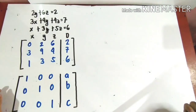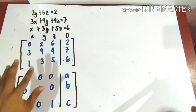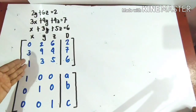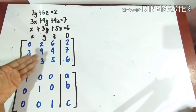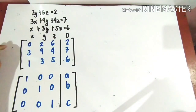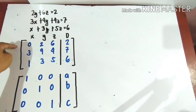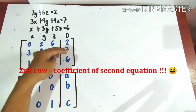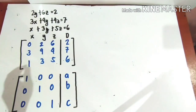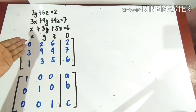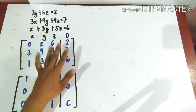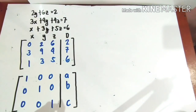We will place the coefficients of the equations into our matrix — the first column for x, second column for y, third column for z, and the last column for the constant d. In the first row, place the coefficients of the first equation; second row for the second equation; third row for the third equation.